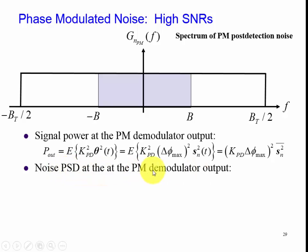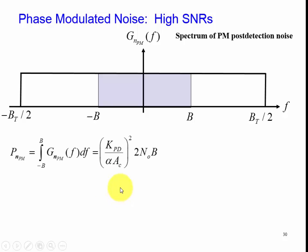The noise PSD at the phase modulated output is governed by this, which was just calculated for our power of our noise that we did earlier. This occurs within the transmission bandwidth. When we integrate it from minus B to B, this is after we filtered this part with our low-pass filter.